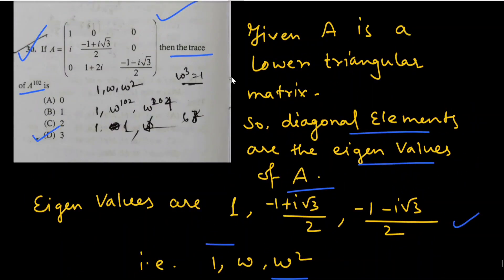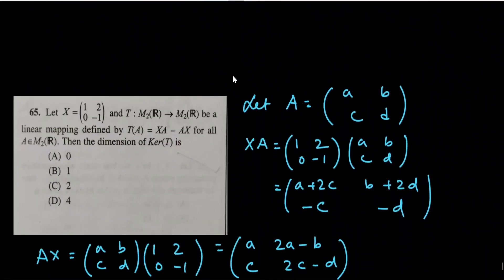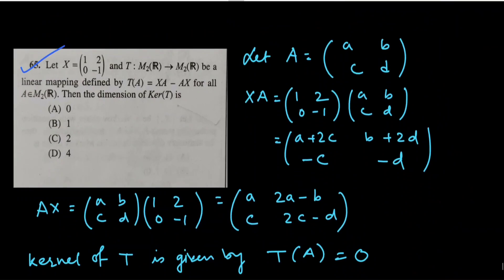Option D is correct. The next question: let X = [[1,2],[0,1]] and T: M₂(ℝ) → M₂(ℝ) be a linear mapping defined by T(A) = XA − AX for all A in the 2×2 matrix space over ℝ. We need to find the dimension of the kernel of T by setting T(A) = 0.